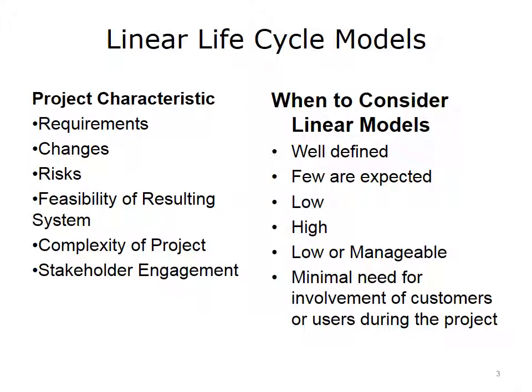All of the lifecycle models will be examined using a set of project characteristics that will help you discriminate the differences between the four models. The six types of characteristics are shown in the left column of this table, detailing the linear model. The characteristics relate to the requirements, changes, risks, the feasibility of the resulting system, the complexity of your project, and the engagement you have with stakeholders.